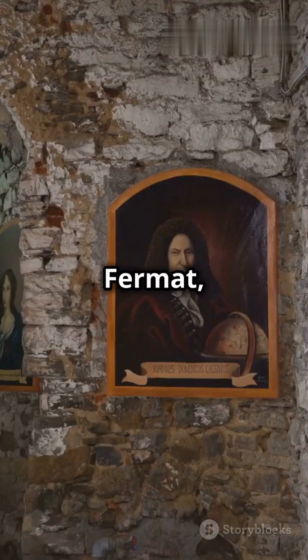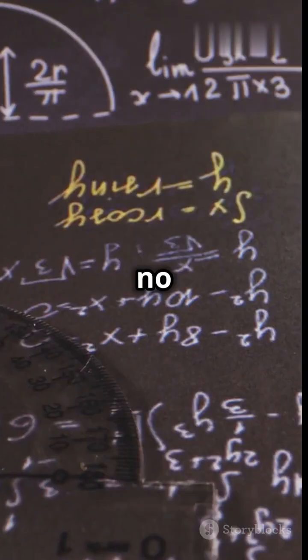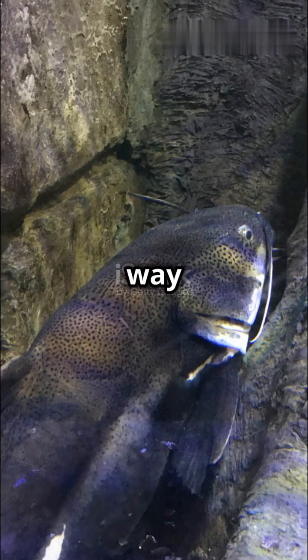This guy Pierre de Fermat writes down, x^n plus y^n equals z^n has no whole number solutions when n is greater than 2. Then he just casually adds, by the way, I have a proof but the margin is too small, lol and leaves.